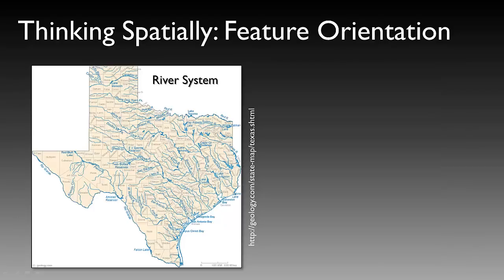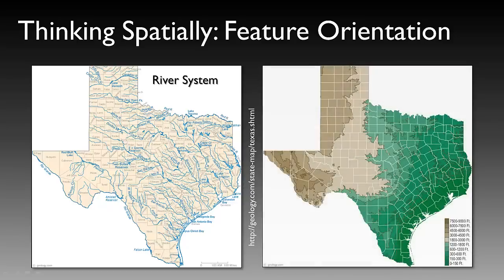Finally, thinking spatially as feature orientation: if we look at a river system and think about what's going on, this river system of Texas shows a general pattern or trend. All the rivers flow in a certain direction. Without knowing anything else, we can start to see elevational changes from west to east towards the Gulf of Mexico. Those river patterns all generally trend down towards the Gulf and ultimately into the Gulf of Mexico itself.